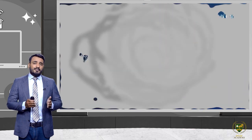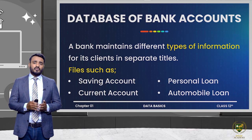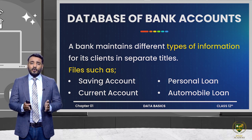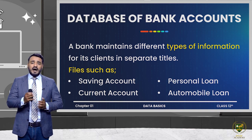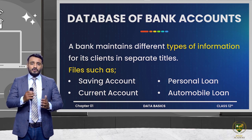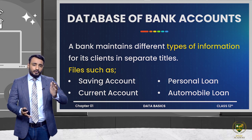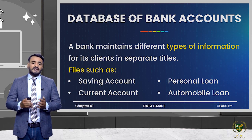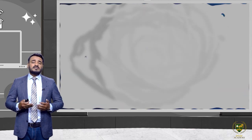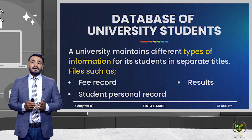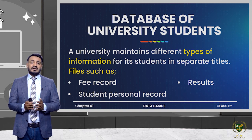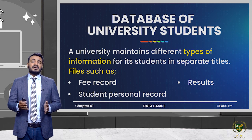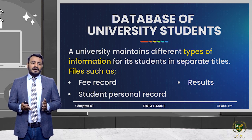A database is divided into different files and the collection of those different files is called a database. For example, in a banking system, there are different types of accounts like saving account, current account, loan account, and personal loan account. Each account has a separate file, and when we collect all those separate files containing different types of information, that represents a complete database. Similarly, university students have separate files for personal records and results, and the collection of those files forms a database.